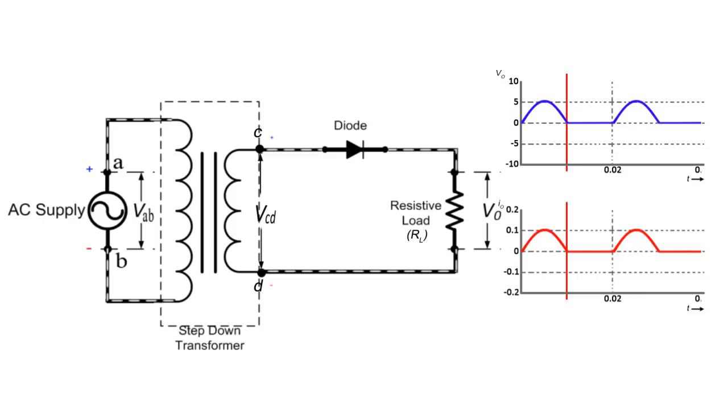This current varies in magnitude as shown here. In this way, the positive half cycle of output voltage V0 is equal to I×RL, appears across the load resistor RL.